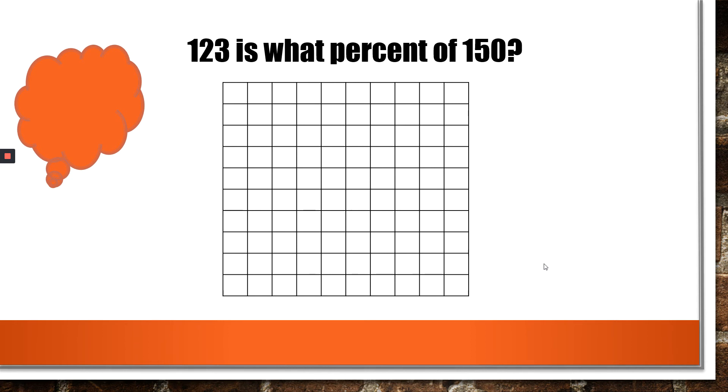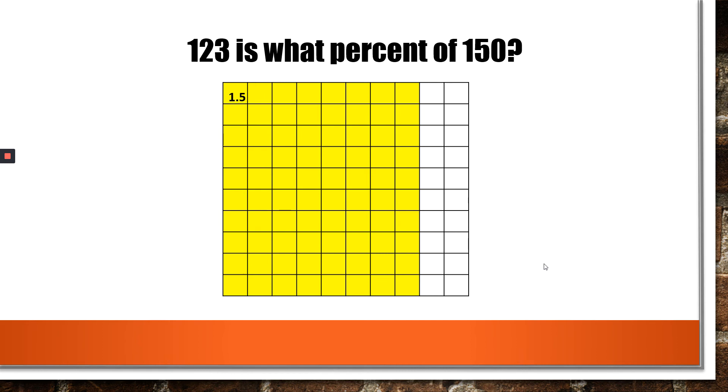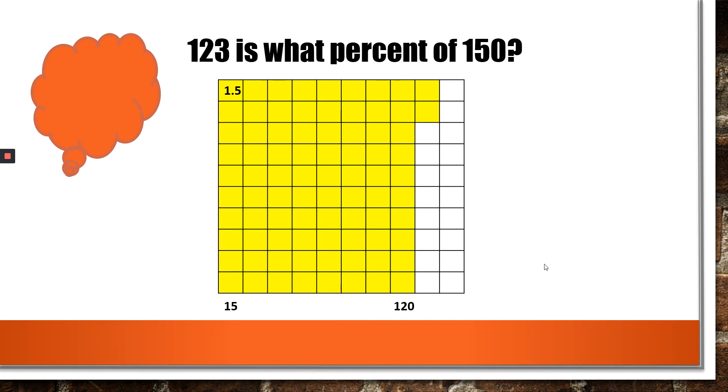123 is what percent of 150? Now, what's the whole? You got it, 150. I want to figure out 150 divided by 100. That gives me 1.5. Now, I'm going to do it by thinking about it first. So in this one column, I have 15. If I fill up columns of 15 all the way to here, I have 120. With two more boxes will give me 123. Now, you can see that I have filled up 82 boxes, so I have 82%. If you want to do it with a calculator, 123, which is the part to the whole of 150, and you will get 82 hundredths, which translates to 82%. Good job.